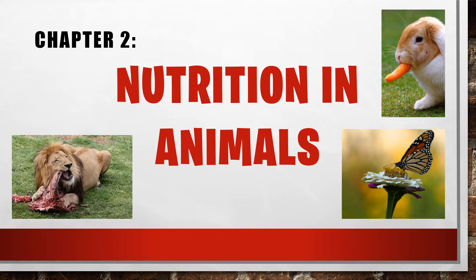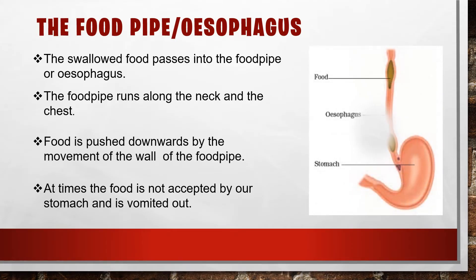Today we are going to study about the food pipe or esophagus, and the next organ is the stomach. The food pipe or esophagus — you know that we give food into the buccal cavity, and that process is called ingestion. Then the food passes into the food pipe, so the solid food passes into the food pipe or esophagus.